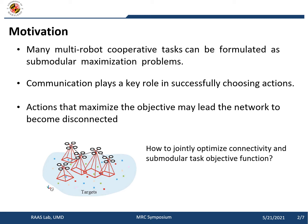In a multirobot system, communication is very important when we want to optimize the submodular objective to choose actions for the robots. In a centralized case, we need to transmit all the information to the central server, and in a distributed case, we need to exchange information with neighbors.